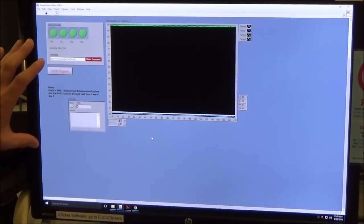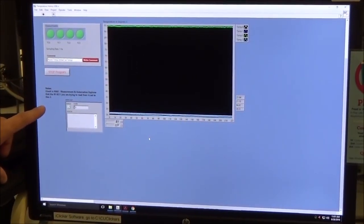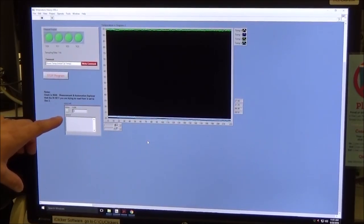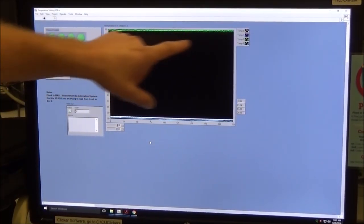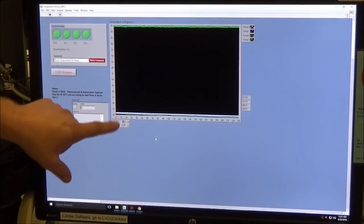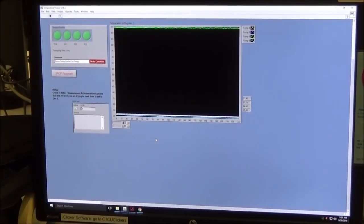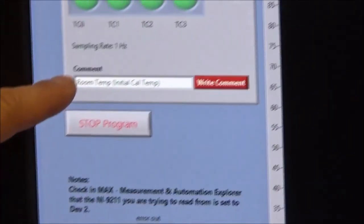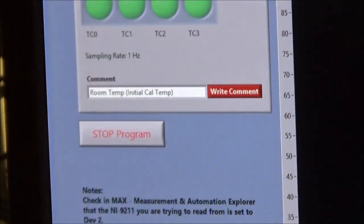Here's a look at the same temperature history USB VI that you used for the earlier experiment. You can see the thermocouple in the boiling water is around 95 degrees C, and the other three thermocouples are around 22-23 degrees Celsius, which corresponds to room temperature. I've inserted a comment explaining which thermocouple is measuring which location.